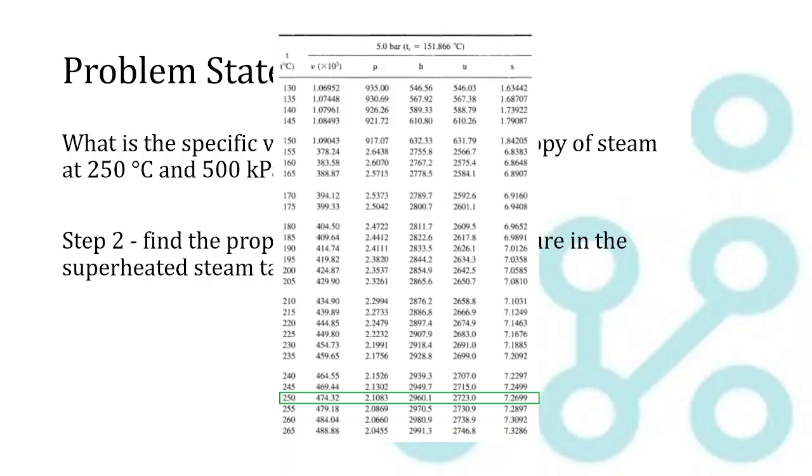One thing to note here is that the specific volume is given with this times 10 to the third. What that means is the proper value has been multiplied by 1,000, 10 to the third, to give you the value in the table. So to report the proper value, we have to take the value in the table and divide it by 1,000.